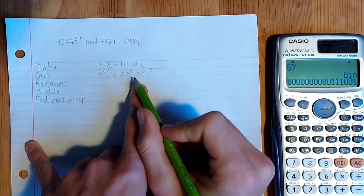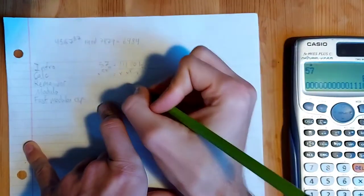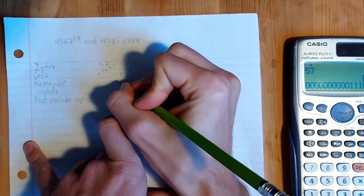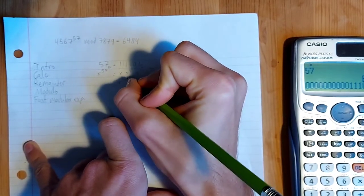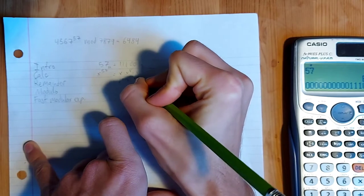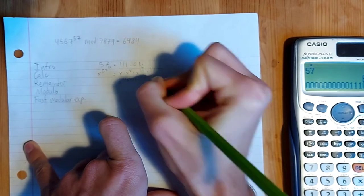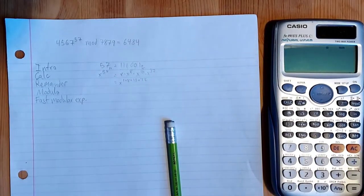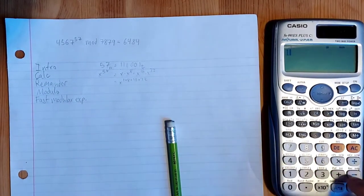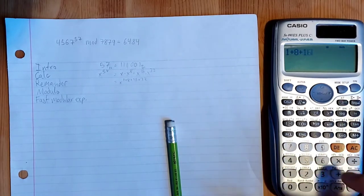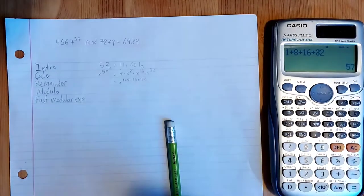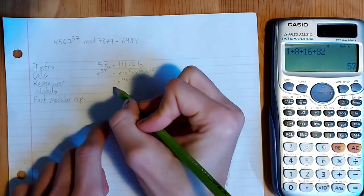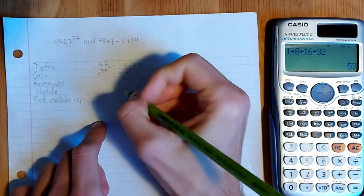And like equivalently, this is equal to x to the 1 plus 8 plus 16 plus 32, which if we put our calculator back into comp mode, which is the default mode, and we just do 1 plus 8 plus 16 plus 32, we can see it's equal to 57. So we know that this actually is equal to x to the 57.